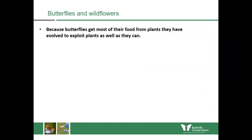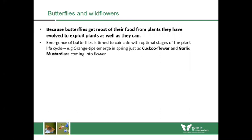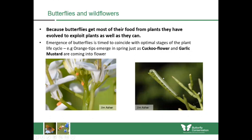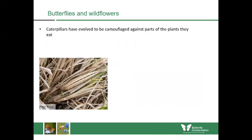Butterflies and wildflowers have a really close relationship because butterflies get most of their food from plants and have evolved specific ways to exploit them. For example, butterflies emerge at certain times to coordinate with plants — the orange tip emerges in spring just as cuckoo flower and garlic mustard come into flower. They lay eggs just before the seed pod has developed so caterpillars can eat them at the right size. If butterflies emerge too early there's nothing to eat; too late and the seeds would be too big or might have already dropped.